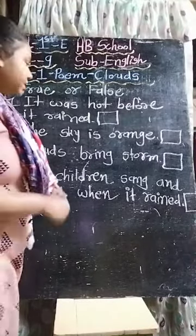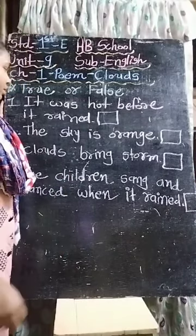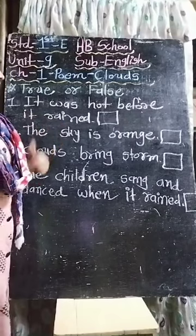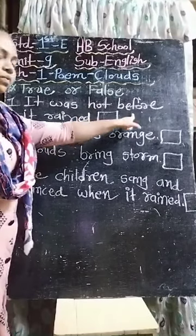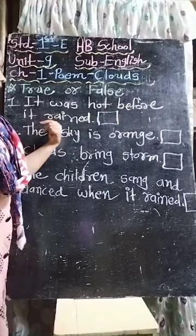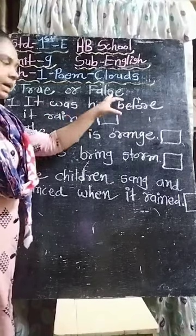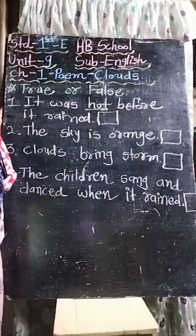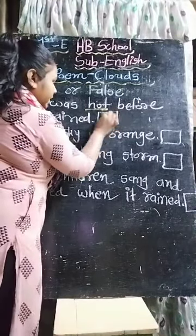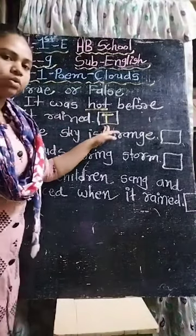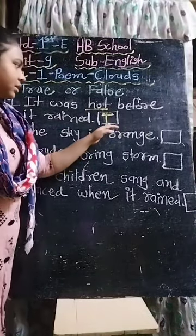Now we will see true or false. First one: 'It was hot before it rained.' It was hot before - यानि पहले. बारिश के पहले क्या था? Hot था. Is it true or false? True - because बारिश आने से पहले गर्मी लग रही थी. So the answer is true.